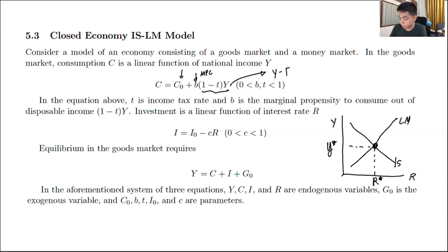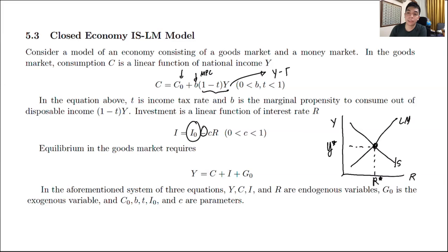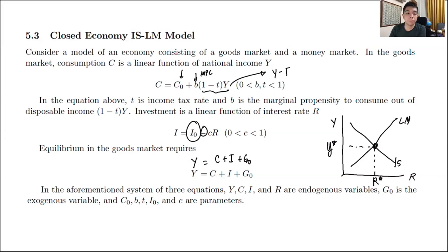Then you have the investment equation, which is a linear function of the interest rate: I equals I₀ minus c times R, where c lies between 0 and 1. Note the negative sign because there's a negative association between the interest rate and investment. In this closed economy Keynesian model — no exports or imports — national income Y equals C plus I plus G₀, where G₀ is government expenditure assumed to be exogenously determined.